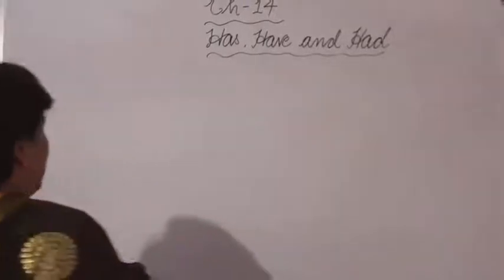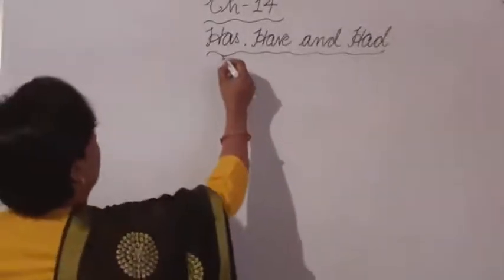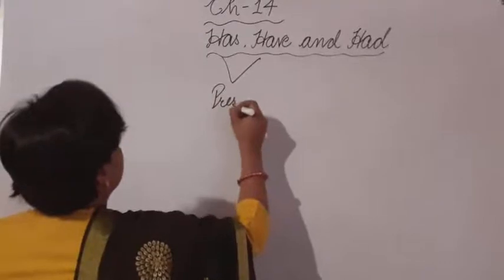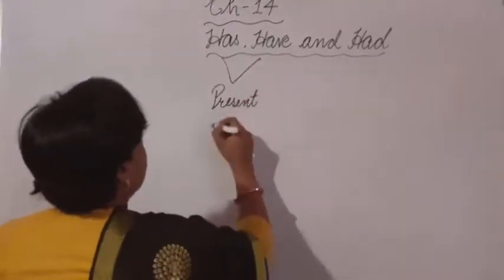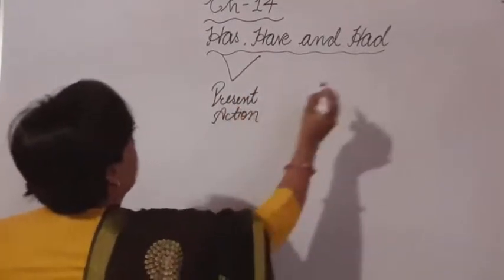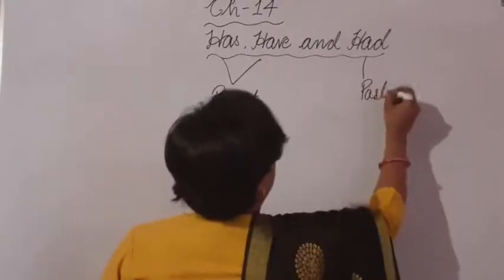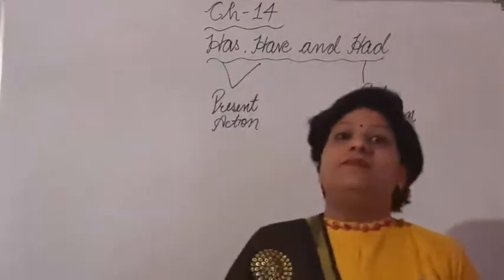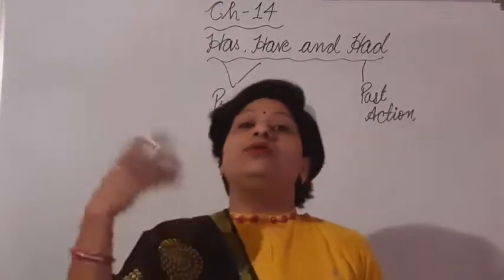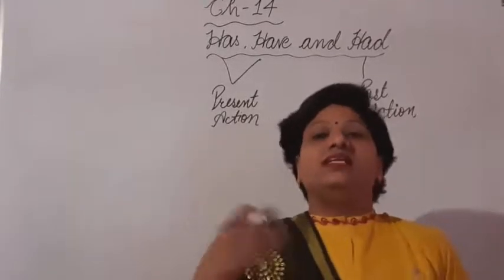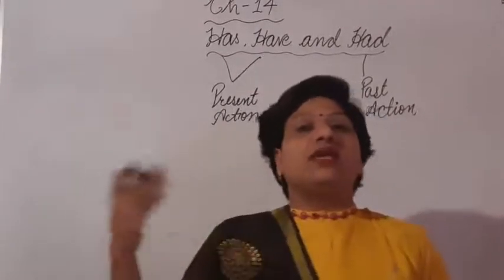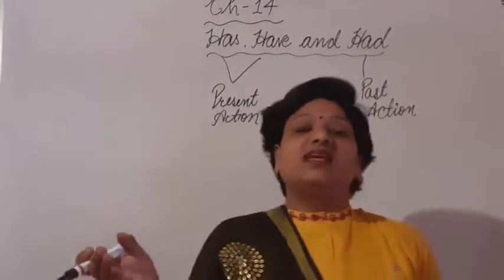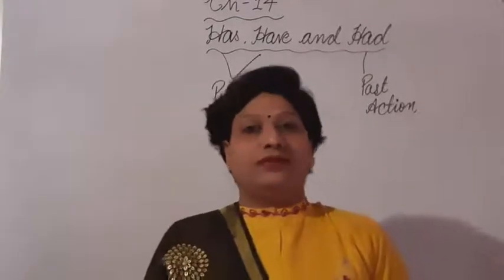Look at here. Has and have are used for present actions, and had is used for past actions. These three are used for possession — meaning belonging to me or belonging to others. If we say that this thing is mine or this thing belongs to someone else, that is connected to another person or people.